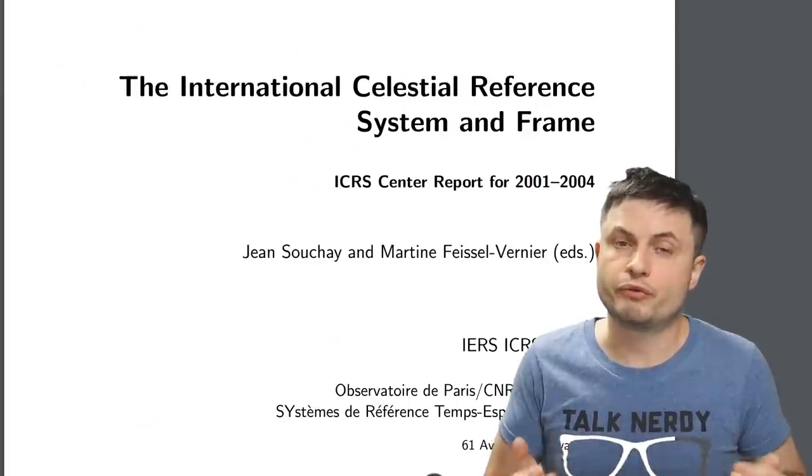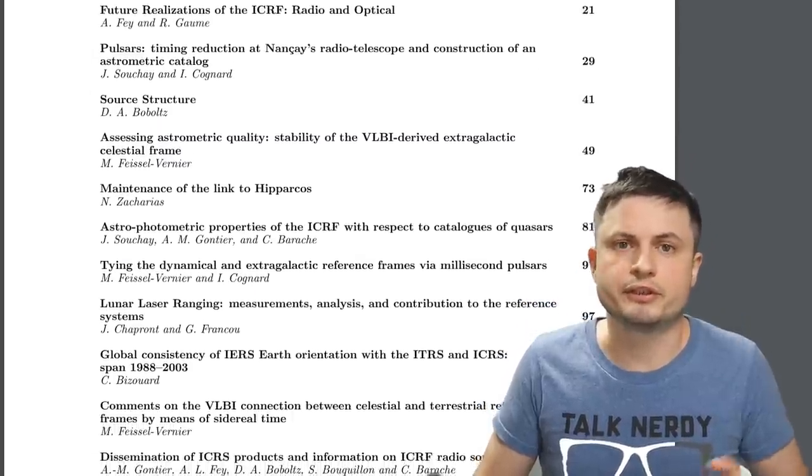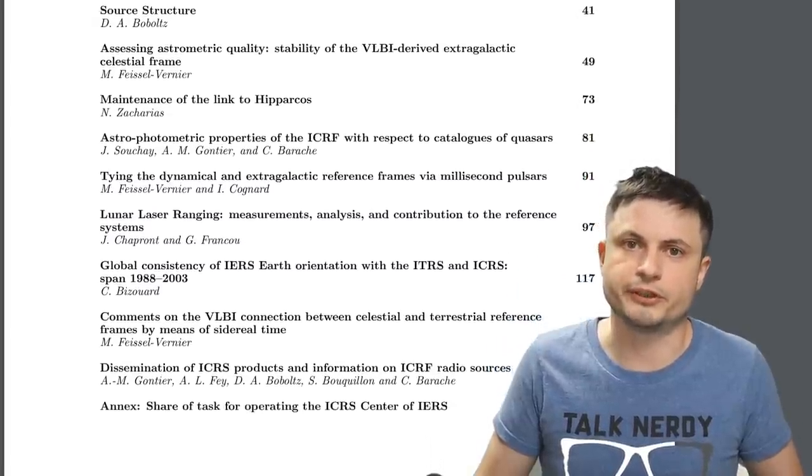But today we're talking about something a little bit different, about the idea of Earth spinning a little bit faster. And the reason I explained all of this to you just now is because the precision of knowing how fast the Earth spins actually once again depends on this quasar map. Something that we refer to as the International Celestial Reference Frame.